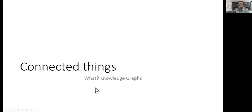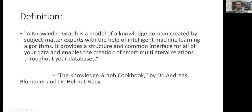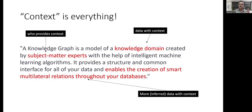Moving forward — I will start with: What are knowledge graphs? Knowledge graphs basically means connected things. That's the most simplistic way of describing them. The textbook definition says a knowledge graph is a model of a knowledge domain — data with context created by subject matter experts — which enables the creation of smart multilateral relations throughout your databases. The essence is: it's data with context.